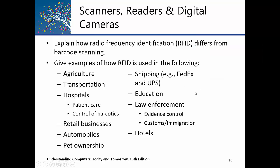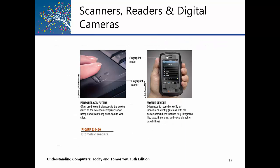Our next major input type is biometric input. Biometric — bio means life, and metric means to measure. Biometrics is when a computer or device measures some sort of physical characteristic of a person and identifies them accordingly. Really easy examples are fingerprint readers. On this laptop computer and this cell phone, if you swipe your finger across that little reader, the device can say 'you're Jim' or 'you're Tom' or 'you're Susie,' and let you into the system without typing passwords.